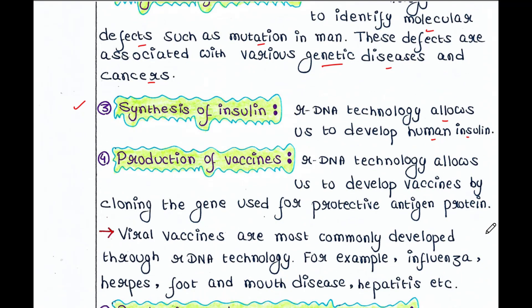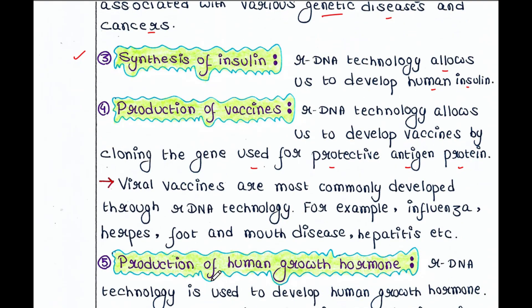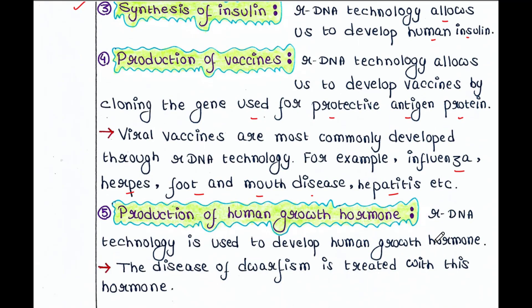Next is production of vaccines. rDNA technology allows us to develop vaccines by cloning the gene used for the protective antigen protein. Viral vaccines are most commonly developed through rDNA technology, for example influenza, herpes, foot and mouth disease, hepatitis, etc.